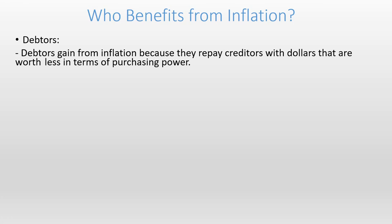Debtors gain from inflation because they repay creditors with dollars that are worth less in terms of purchasing power. A debtor could be an individual taking a loan from a friend, an individual borrowing from a bank, or even a government borrowing money. These are different forms of debtors, and the parties they borrow from — whether banks, individuals, or governments — are called creditors.